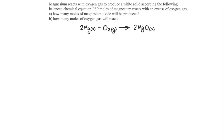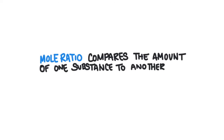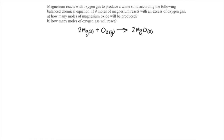To solve this problem, we're going to use a mole ratio. Mole ratios compare the amount of one substance to another substance based on the chemical equation. The chemical equation is just like a recipe. Stoichiometry problems will always involve the comparison of two substances to each other. The amount of one substance will be known, and the amount of the other substance will be unknown.